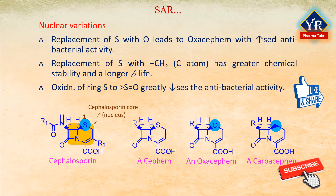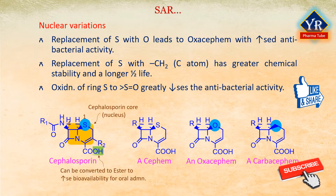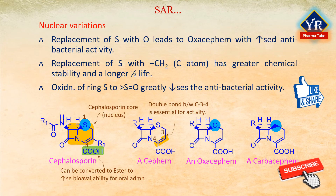Oxidation of the ring sulfur to sulfoxide or sulfone greatly reduces the antibacterial activity. The carboxylate group at C4 can be converted into ester products to increase bioavailability of cephalosporins and these can be given orally as well. Olefinic linkages, that is the double bond present at C3-C4, is essential for antibacterial activity. Isomerization of the double bond to the 2-3 position leads to great loss of activity.